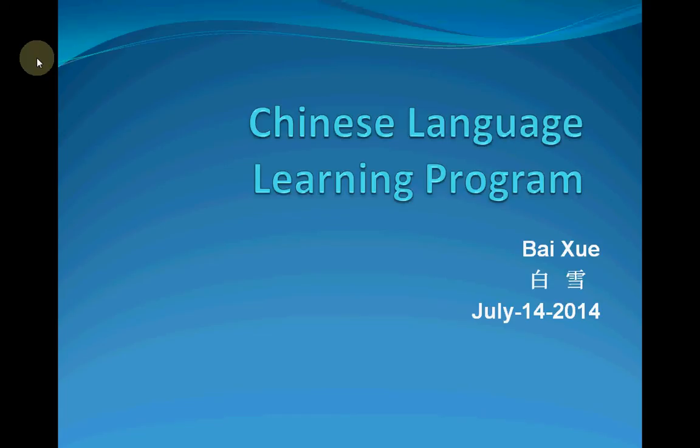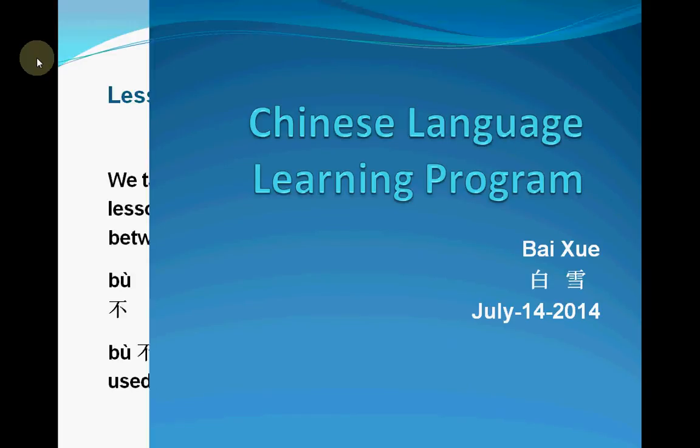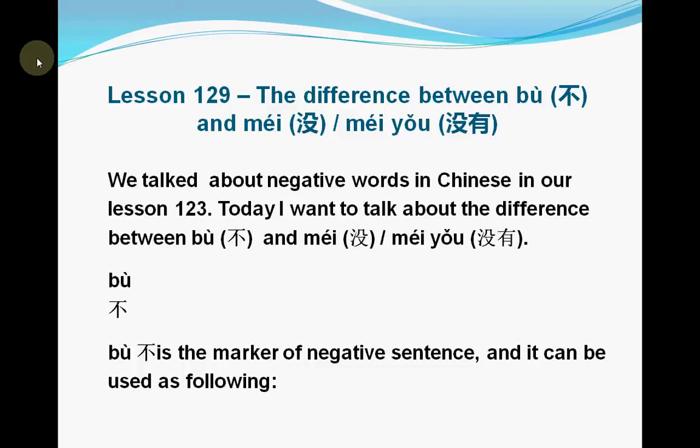Hello everyone, welcome back. This is Baixue's Chinese language learning program. In our previous lesson 123, we talked about some negative words in Chinese and negative sentences. Some friends have asked me when and how to use 不 (bù) and 没/没有 (méi/méiyǒu) to make negative sentences in Chinese, so today I want to give you more detail and more examples about that.